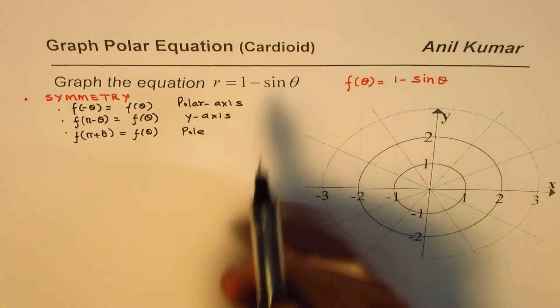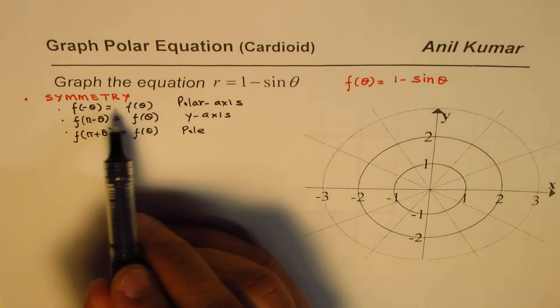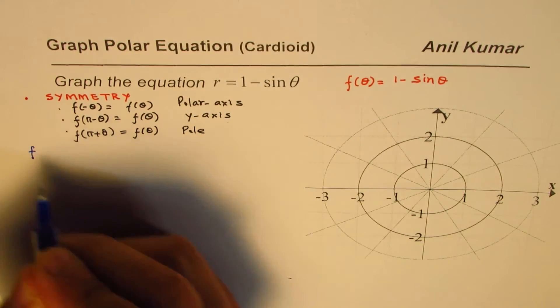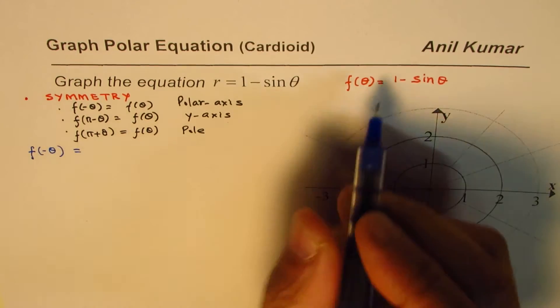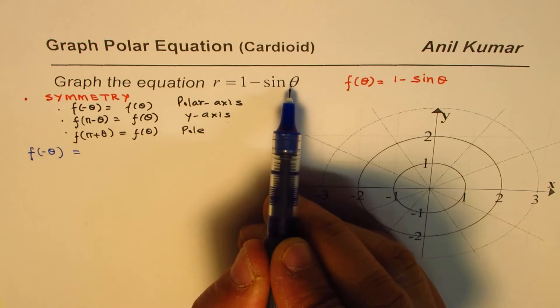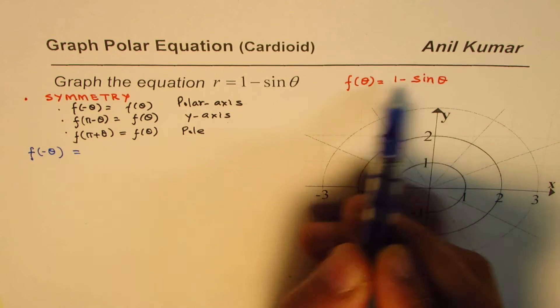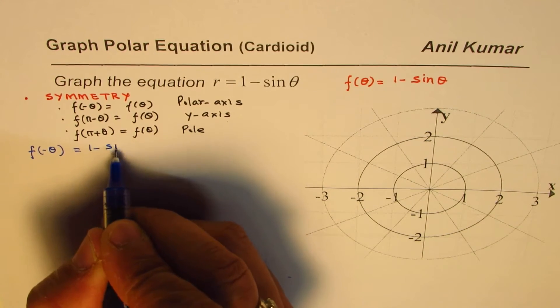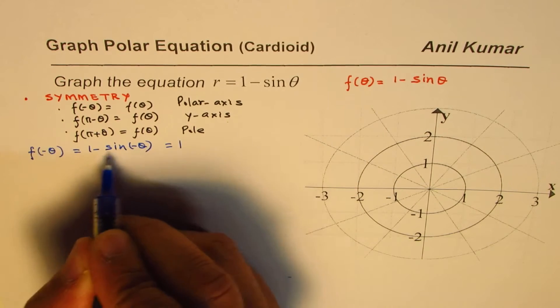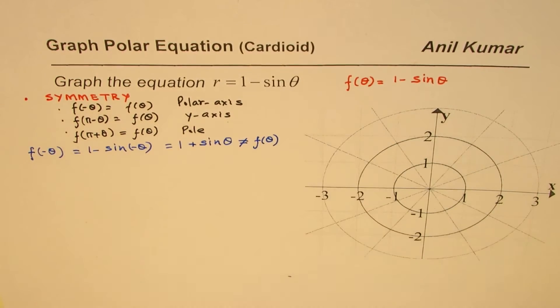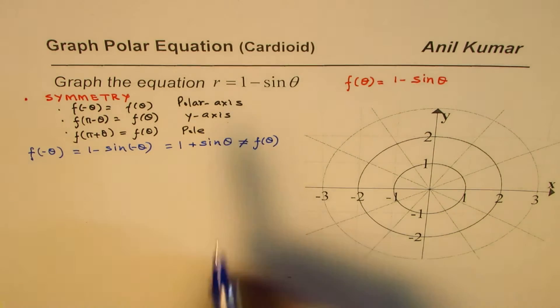For a sine function, we know it is kind of an odd function, so f(-θ) equals f(θ) will not really work. Let me show you. f(-θ) is 1 minus sine(-θ), which is 1 minus (-sin θ), so that makes it 1 plus sine theta. And you know it is not equals to f(θ). So that means we do not have this particular polar axis symmetry.